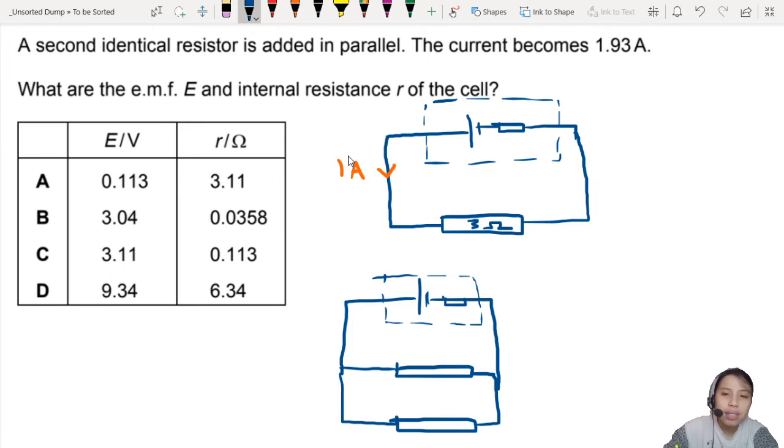Because if I say 1.93 is this, that means it will split into half and half. So 1.93 divided by 2 for each branch. But then, I don't know. What do you think? Let's just try out the question, then we'll decide. Let's do the first thing first. Here you got an EMF E, R is your internal resistance. How do you find an equation for the first scenario? Let's write it down.